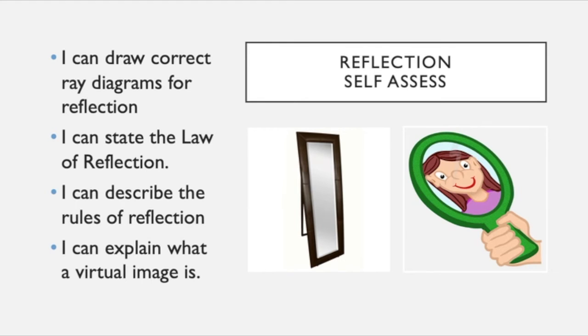So that's pretty much it for this lesson. These are the things you should be able to do. You should be able to draw correct ray diagrams for reflection. You should be able to state the law of reflection and describe the rules of reflection, and you should also be able to explain what a virtual image is.